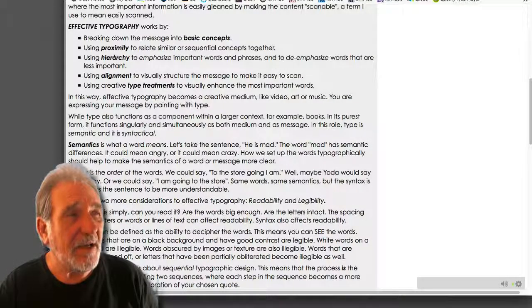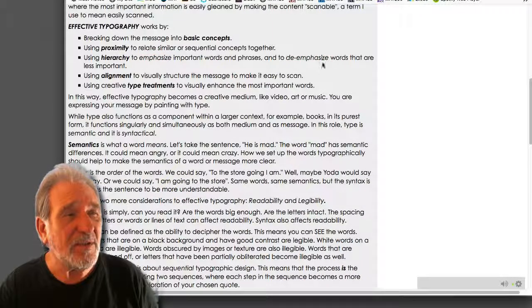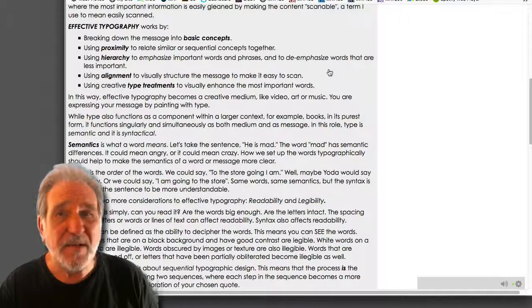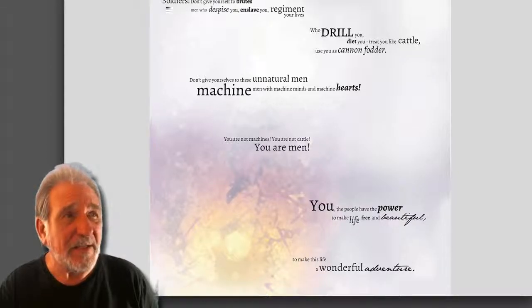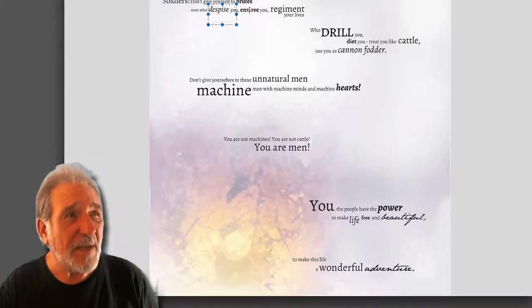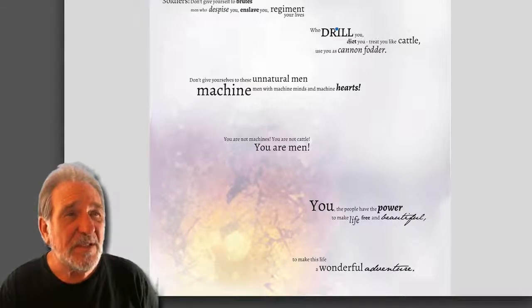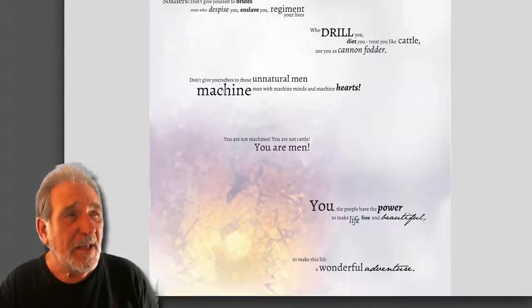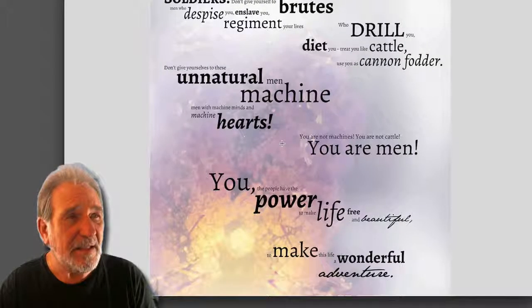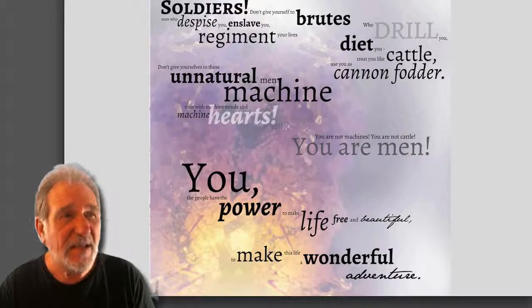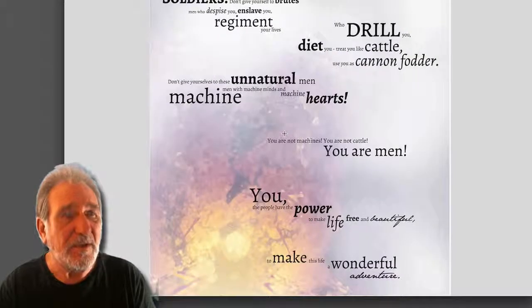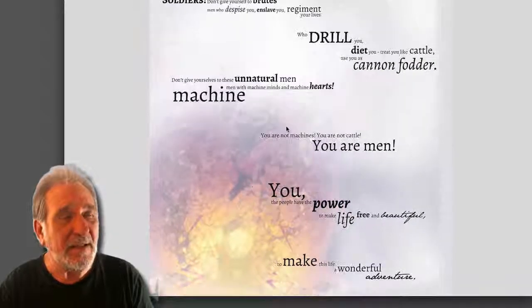Our next idea is hierarchy — emphasizing words that are important and deemphasizing words that are less important. So 'soldiers' is important, 'don't give yourself to brutes' — basically words like 'despise,' 'enslave,' 'regiment your lives.' The designer has figured out which things they want to be important, and those elements get larger and more dominant as the sequence moves forward. That sense of hierarchy, emphasis, and deemphasis is crucial to keeping your message powerful and scannable.